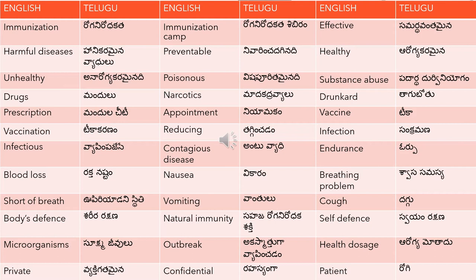Private is 'vyakti gathamayina', meaning pertaining to an individual person. Confidential is 'rahasyanga', meaning something which is hidden or not revealed. So private and confidential have similar meanings but a small difference: private relates to the individual, while confidential means something kept secret.